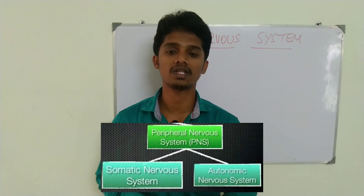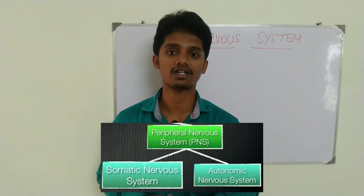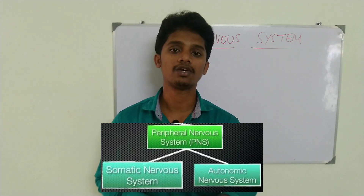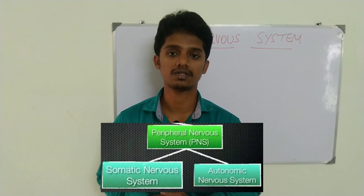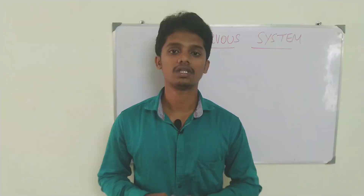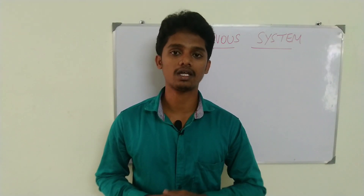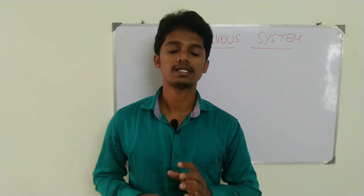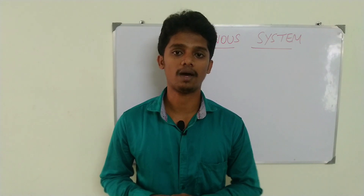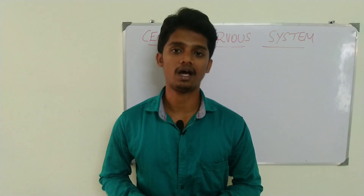Let's talk about the Peripheral Nervous System. It has two parts: one is the Autonomic Nervous System, short for ANS, and one is the Somatic Nervous System, short for SNS. The Peripheral Nervous System will be covered in the next class. Now, let's talk about the Central Nervous System.